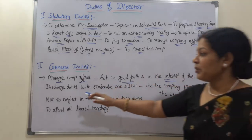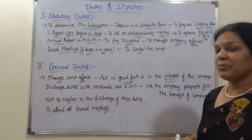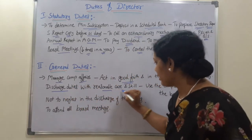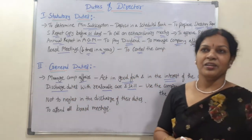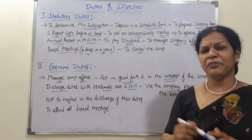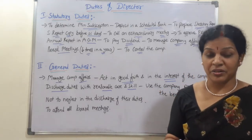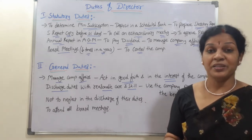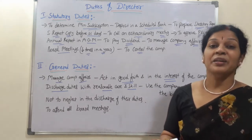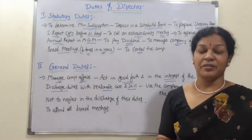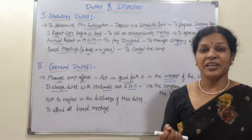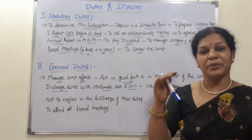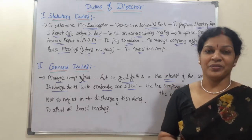The third general duty is to discharge duties with reasonable care and skill. From every angle, the director must be careful in handling the organization — using his knowledge, skill, and experience. He must take reasonable minimum care and must not neglect the organization, because if a director with higher authority neglects his role, the company will suffer.